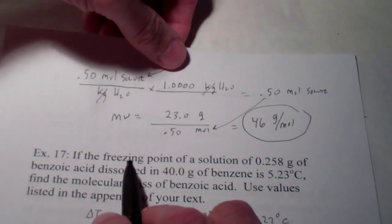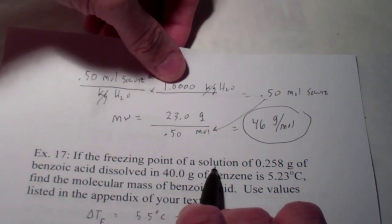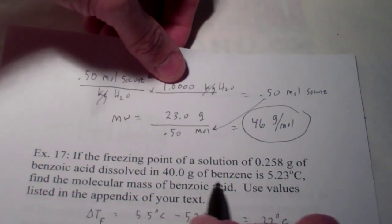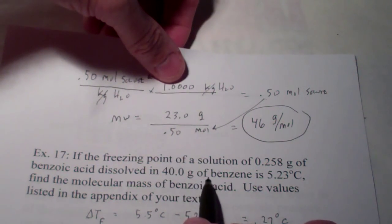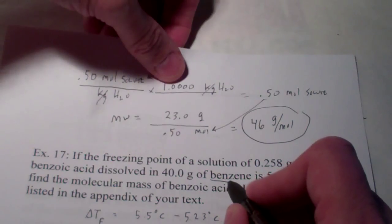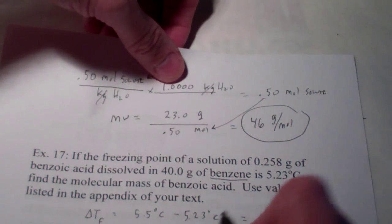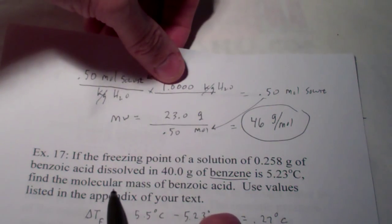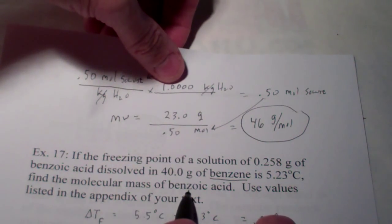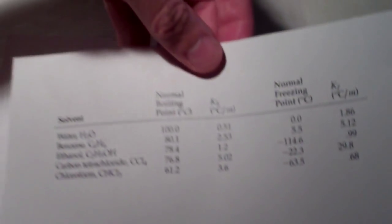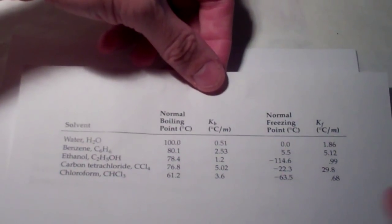In this particular case, I have the freezing point of a solution of 0.258 grams of benzoic acid dissolved in 40 grams of benzene. So my solvent this time is benzene and the solution freezes at 5.23 degrees. We want to find the molecular mass of benzoic acid. That's the solute and we'll use the values. Well, we won't use the ones in the back of your text. I have this chart that I showed you folks earlier.